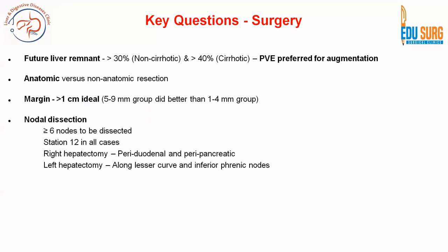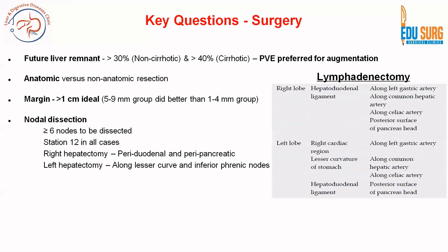When we talk of nodal dissection, as per the staging criteria, at least 6 nodes need to be dissected in IHCC. Station 12 needs to be removed in all cases. In right hepatectomy cases — right-sided disease — periduodenal and peripancreatic nodes need clearance. In left-sided disease, you need to clear the lesser curvature and the inferior phrenic nodes. The hepatoduodenal ligament nodes must be cleared in all cases.